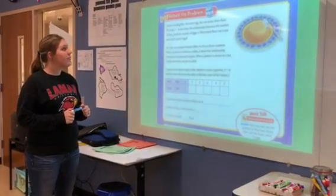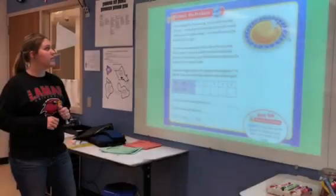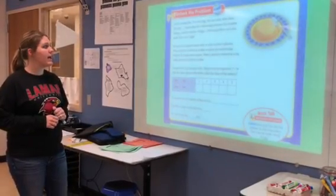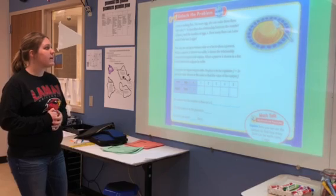The rule F equals 3E describes the relationship between the number of flans, F, and the number of eggs, E. How many flans can Louisa make if she uses five eggs?